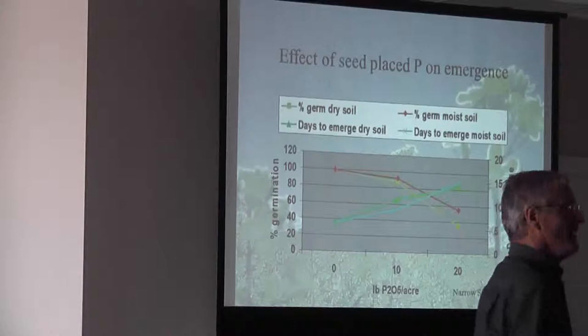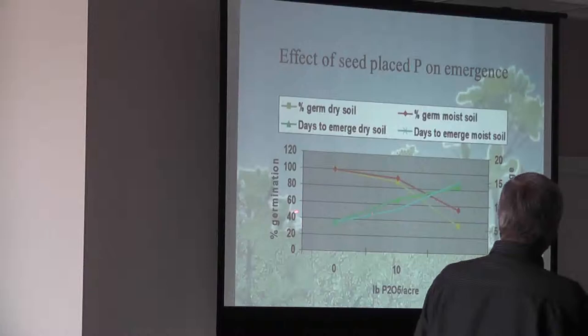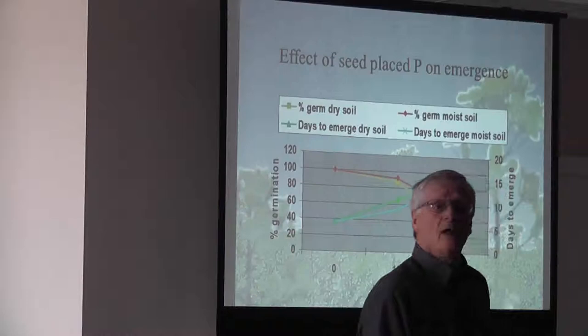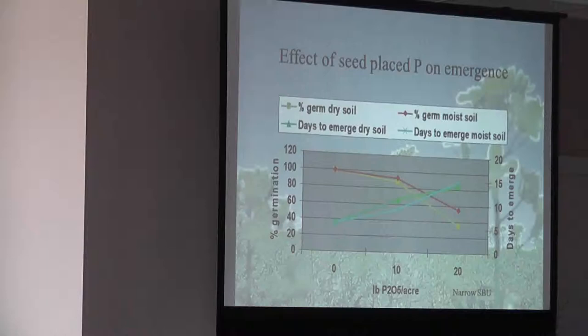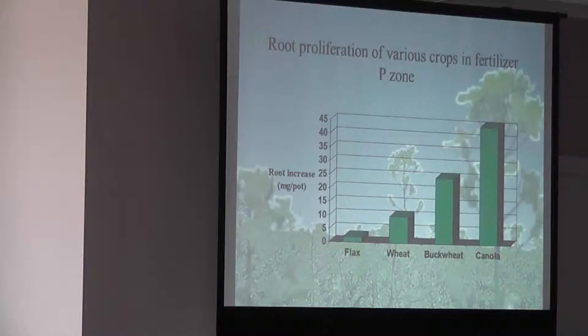This is P. Everyone says phosphorus is nice and benign with the seed. Well, near 20 pounds, look what it's done. That's good soil moisture. We've seen a real dramatic drop in germination and emergence, and we've seen a huge increase in days to emerge. Just the salt effect of that fertilizer with the seed is going to slow down the germination process.